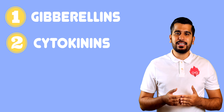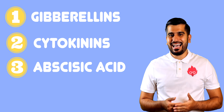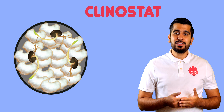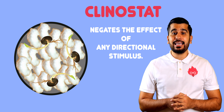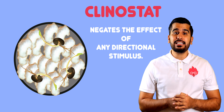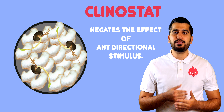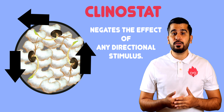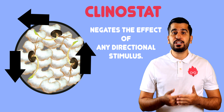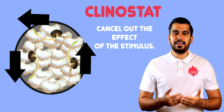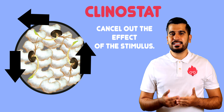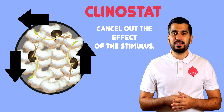Over the years, several plant hormones have been found which influence plant growth, such as gibberellins, cytokinins, abscisic acid, and ethene. A clinostat is a rotating device that negates the effect of any directional stimulus. When plants are grown on these devices, they will grow neither up nor down, but straight outwards in whichever direction they are placed, as the effect of the stimulus has been cancelled out by the revolving clinostat.